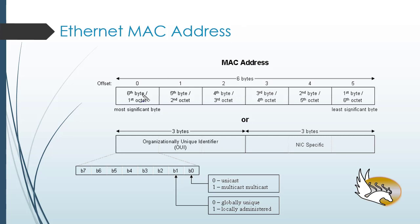Within the 6 bytes of the MAC address, we have byte number 0 — this is the first byte because we start counting from 0 in the computer world. Then we have byte number 1, byte number 2, then byte number 3, 4, and 5.